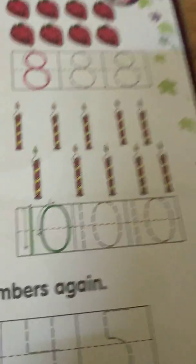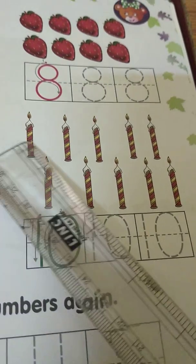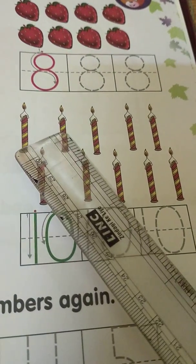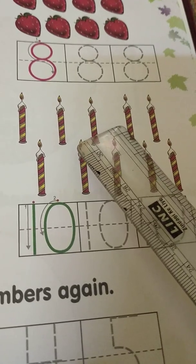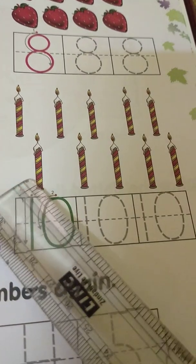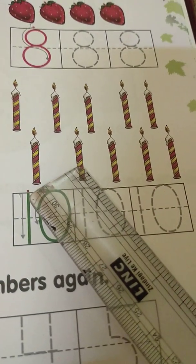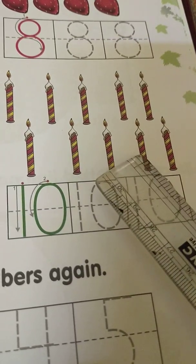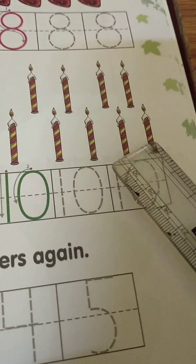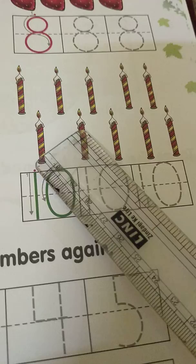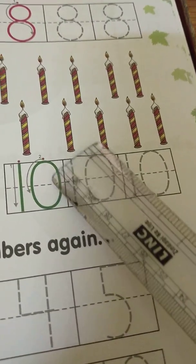How many candles are there? One, two, three, four, five, six, seven, eight, nine, ten. So here I will write one and zero. Together it makes ten.